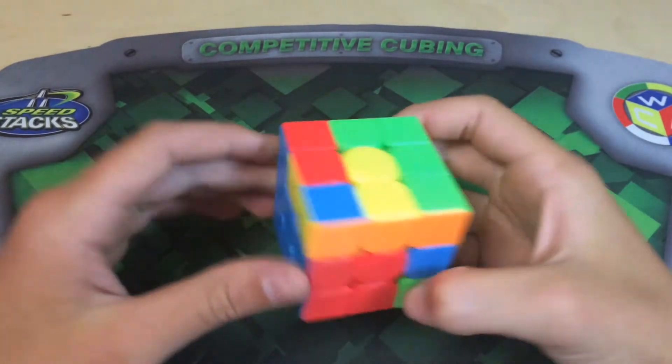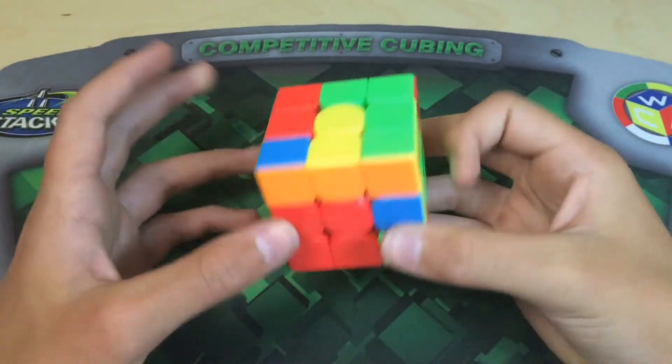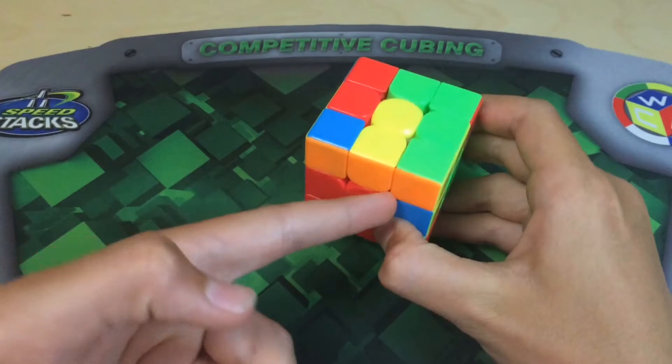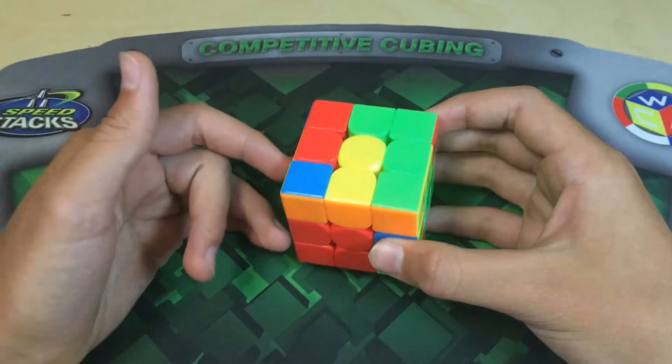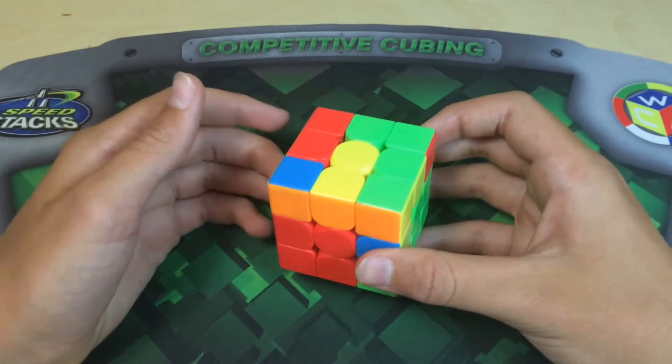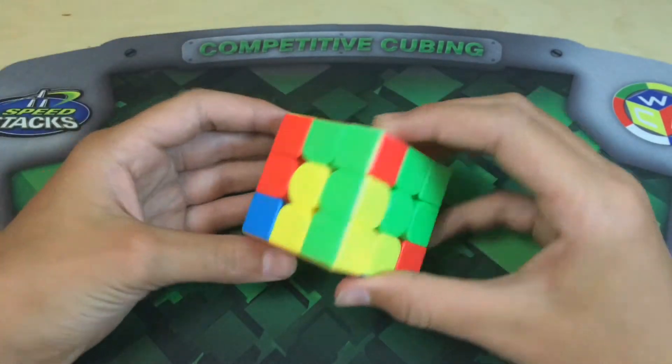You could also have one of the more unfortunate cases where you have one or no good edges. In this case, I just have one good edge. And you could have tried to influence your good edges during the last two slots. But if you didn't, that is okay.